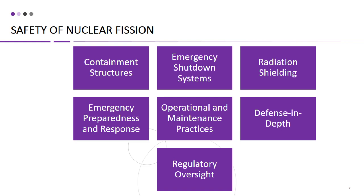Nuclear power plants are equipped with multiple safety systems that can initiate an emergency shutdown of the reactor in the event of abnormal conditions. These systems are designed to rapidly shut down the nuclear chain reaction and bring the reactor to a safe state. One common system is the SCRAM system, which rapidly inserts control rods into the reactor to absorb neutrons and halt the fission chain reaction. Other systems, such as the reactor protection system and the engineered safety features, are also in place to detect and respond to abnormal conditions.